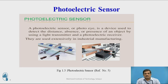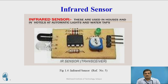A photoelectric sensor is used to detect the distance, absence, or presence of an object using a light transmitter and photoelectric receiver. These are usually used in industrial manufacturing to detect the distance, absence, and presence of objects in industrial areas. Infrared sensors are used in houses and hotels for automatic lights and water taps, allowing users to remotely monitor automatic on and off of their water and lights.